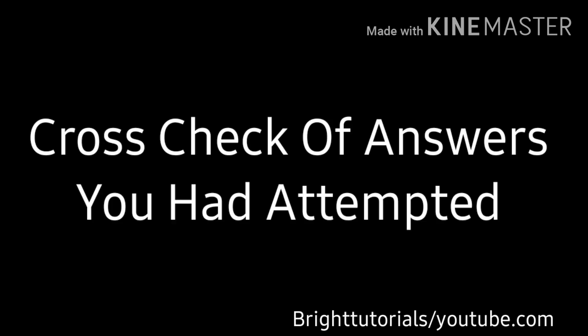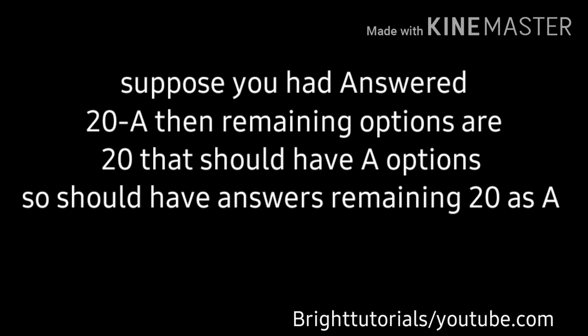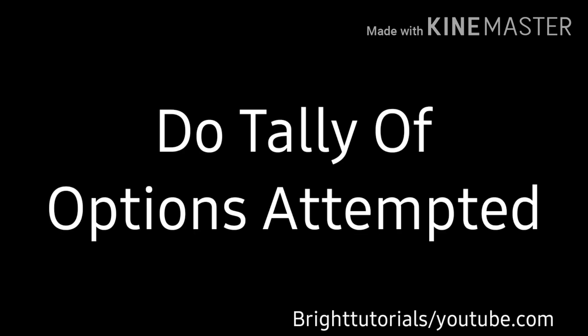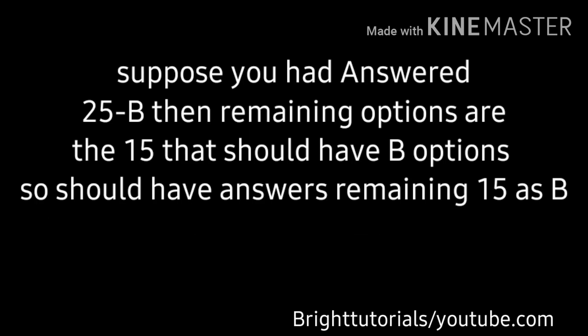For example, suppose you have answered 20 questions as option A. The remaining 20 unanswered questions that should have option A — by this trick, you should answer those remaining 20 questions as option A. You should do a tally at the last moment of the examination of the answers you have attempted.